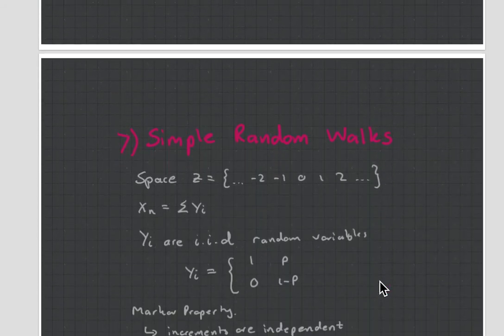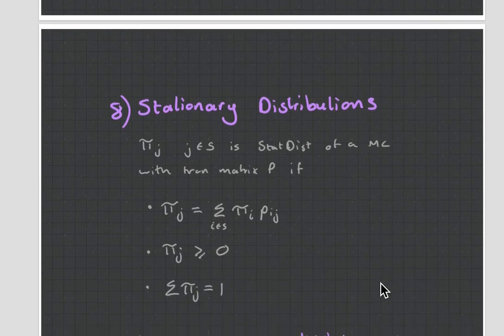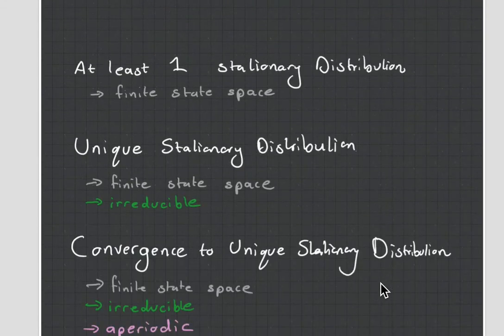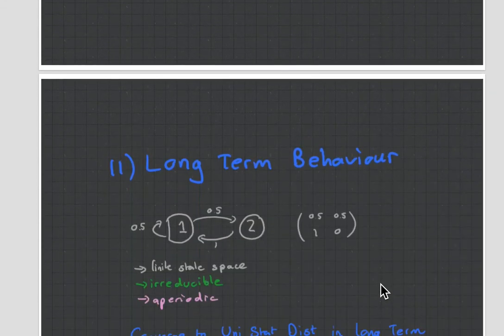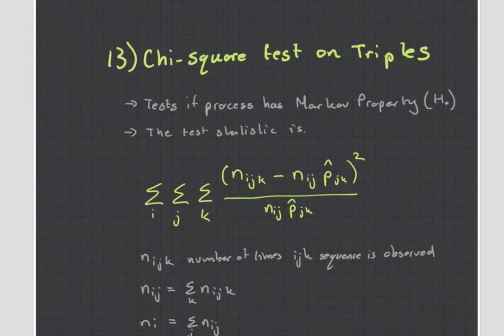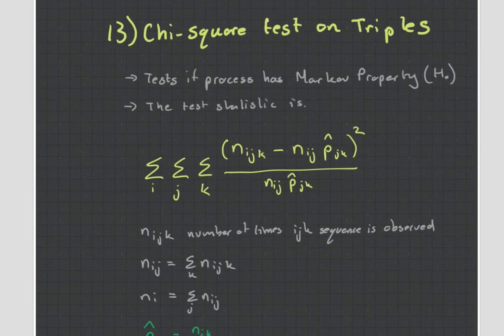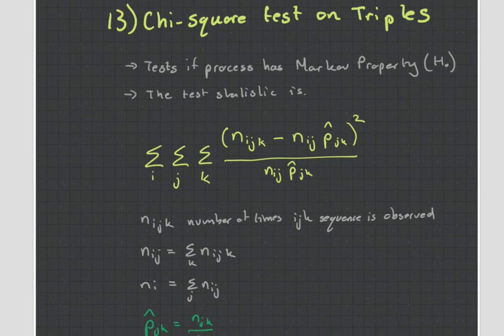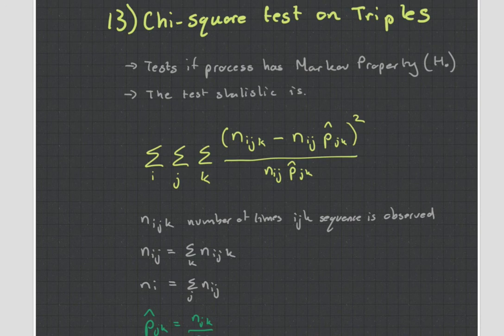But yeah, that's all I'm going to talk about in part one of the video. Part two, I'm going to be looking at simple random walks, stationary distributions, irreducibility, periodicity, the three conditions, long-term behavior, estimating transition probabilities, and the chi-squared test on triples to test if something has a Markov property. But that will all be done in the next video. So, I hope you enjoyed this one and stay tuned for that one. Cheers.